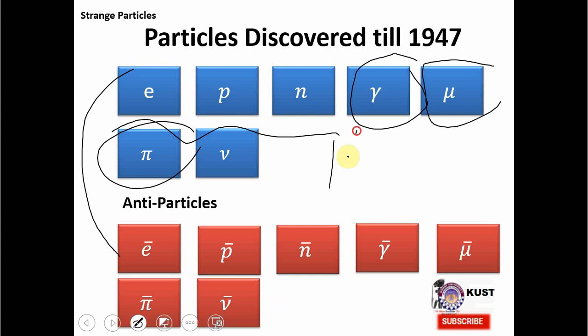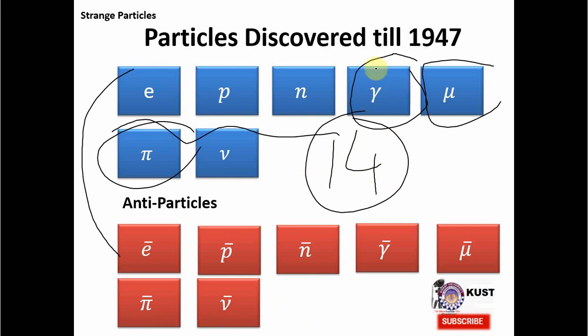In 1947, we had only 14 fundamental particles to explain not only the structure of the atom but also the interactions known at that time. These particles were at that time considered fundamental, but later on we found that some of them are not — for example, the proton has a structure and the neutron has a structure, although the electron and neutrino are still considered to be fundamental particles. By fundamental, we mean that they have no further structure. These 14 particles made a very simple picture.